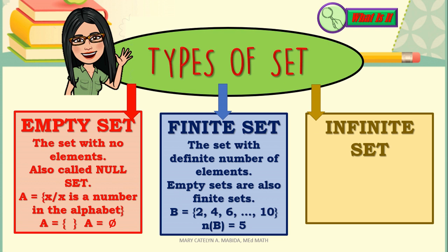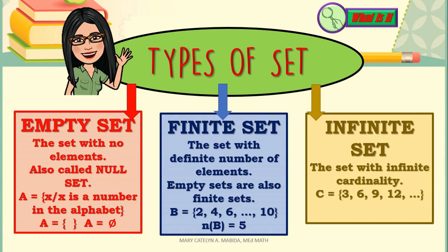And lastly, we talk about Infinite Set — the set with infinite cardinality. For example, set C contains numbers which are multiples of 3. The ellipsis after the last written element represents all the other multiples of 3 not mentioned here. Therefore, since it is infinite, the cardinality of set C is infinite.